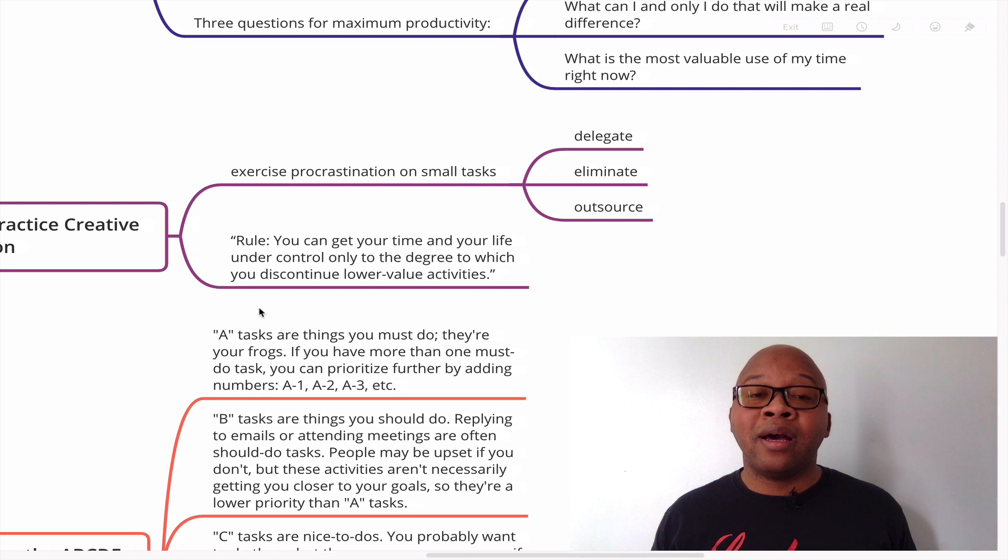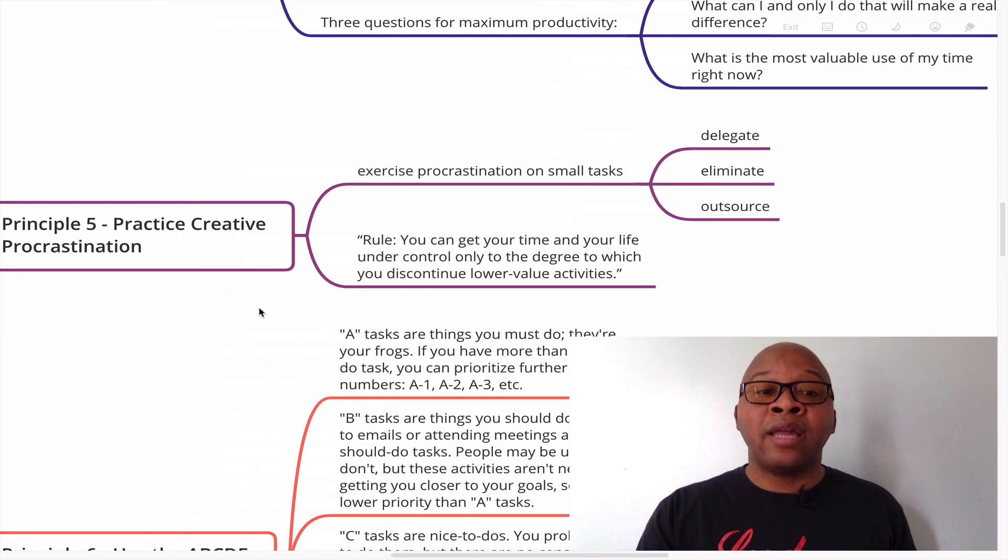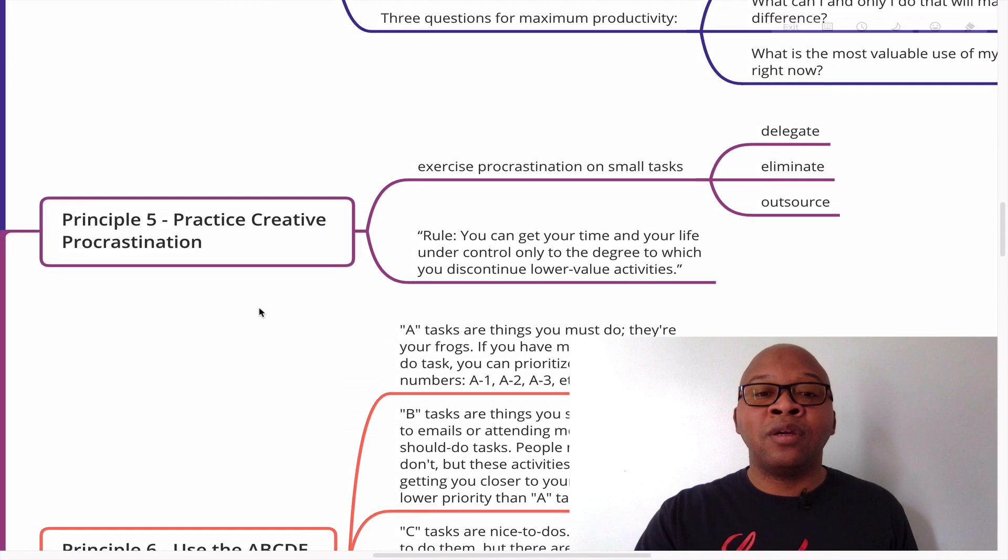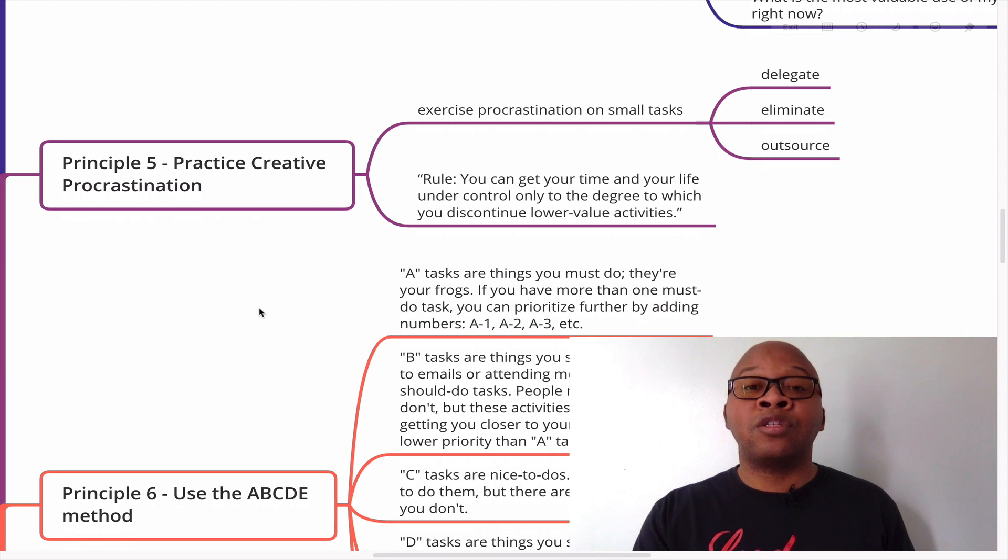So you want to procrastinate on some of these things. You don't have to watch a lot of television. You don't need to watch hours of television. You can use that time towards something else that's productive. And you can think of other areas in your schedule where it's a black hole where you're wasting time. You can focus on a high value task. And that is, again, you want to practice creative procrastination. So exercise procrastination on small tasks.